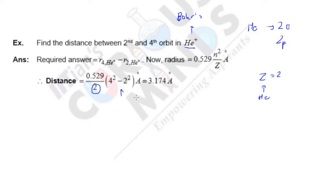So this comes out to be 16 minus 4, which is 12. So 12 into 0.529 upon 2. This answer comes out to be 3.174 angstrom.